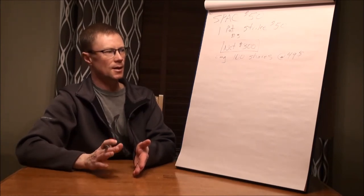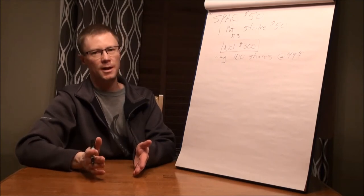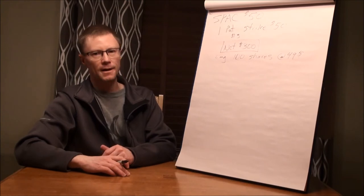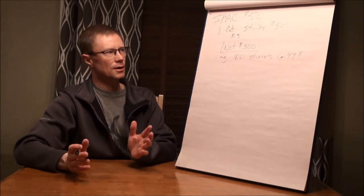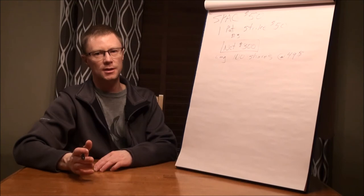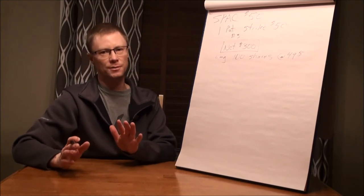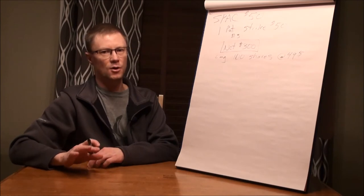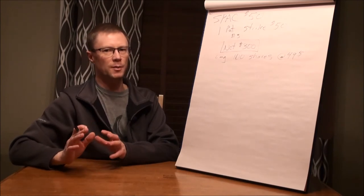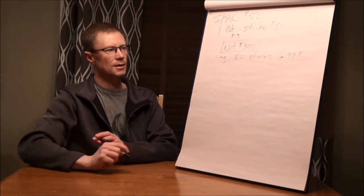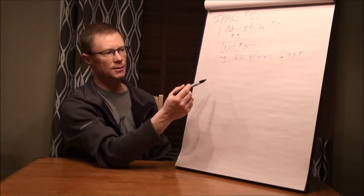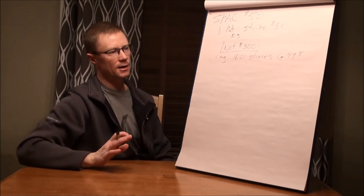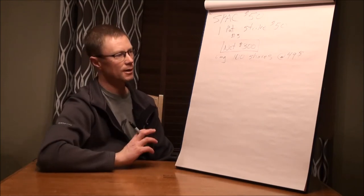Just review where we're at: we sold the put, we made $300 on that. We got put the shares at $49 so we're down a hundred on that. So right now we're up net about $200 if you're following along. So now we have a hundred shares and let's just say for argument's sake we don't have any cash, we just did this all on margin. We're just assuming that you've got a whole bunch of blue chip stocks and a big pile of margin. So we're not outlaying any cash, these shares were put to us at $49, all that went against our margin. We haven't put any cash out, it's just showing up as a negative cash balance in our account.